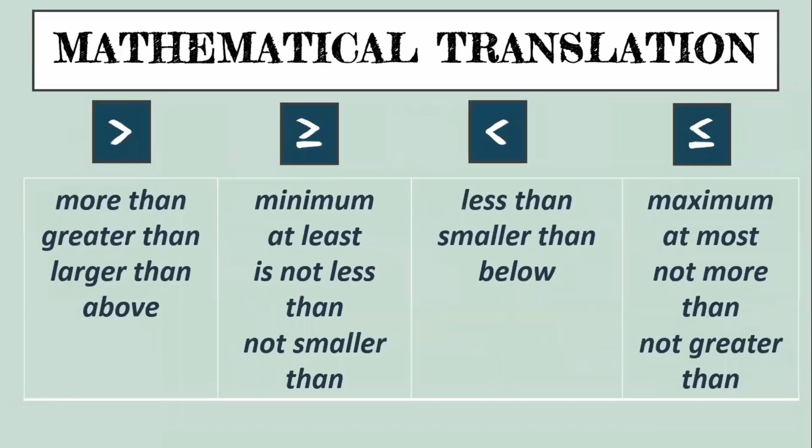And for the inequality sign, for greater than, we have more than, greater than, larger than, or above. For greater than or equal, we can use the word minimum, at least, not less than, not smaller than. For less than, we can use the word smaller than or below. And for less than or equal, we can use the word maximum, at most, not more than, not greater than. So those are some translations that you can use to translate English sentence to mathematical sentence.